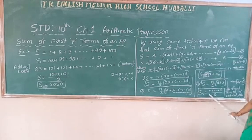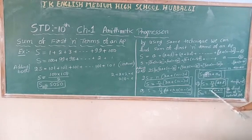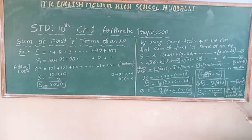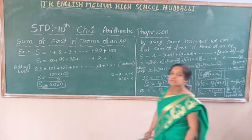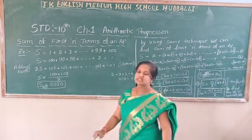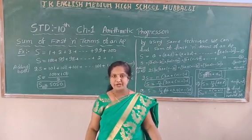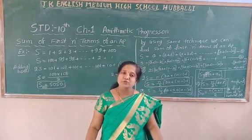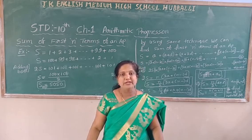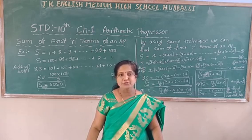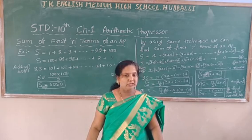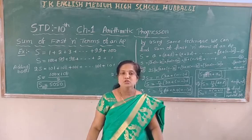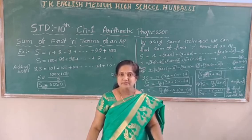Another formula: Sn equals n into n plus 1 by 2. You can use this formula directly when you need to find the sum of n natural numbers. Natural numbers are the same as positive integers. So to find the sum of natural numbers, use: Sn equals n into n plus 1 by 2.